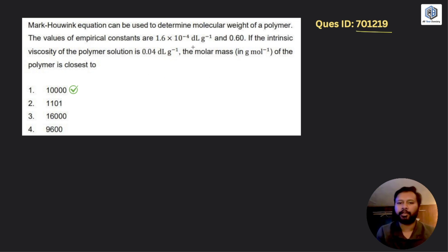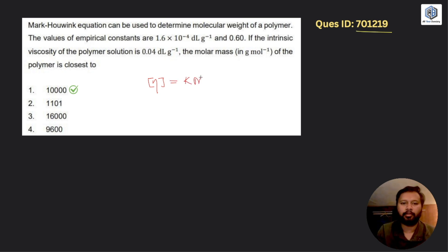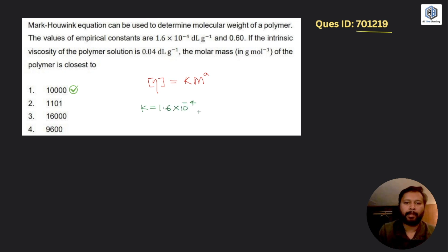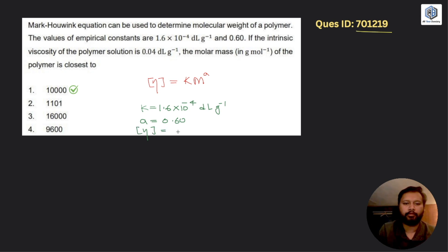They have not mentioned which constant is which, so you have to go along with the units. The Mark-Houwink equation is [η] = K × M^a, where K is an empirical constant with units of dL/g, and a is also a constant — since it is an exponential power, it has no unit. With that, we can understand that K = 1.6 × 10⁻⁴ dL/g and a = 0.60. The intrinsic viscosity η is given as 0.04 dL/g.